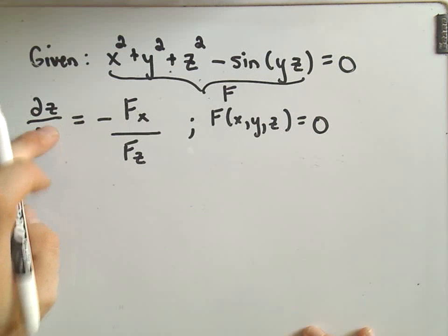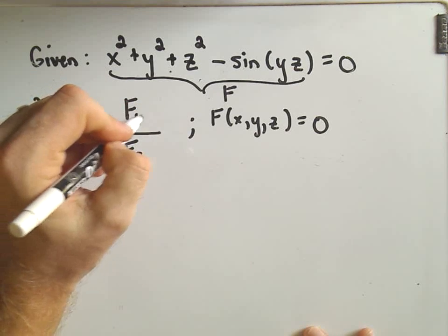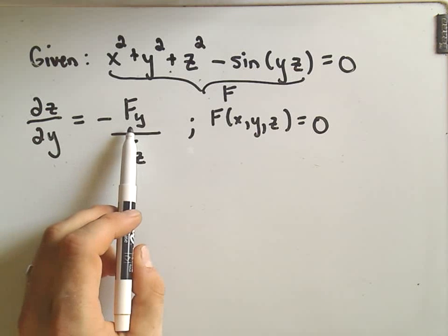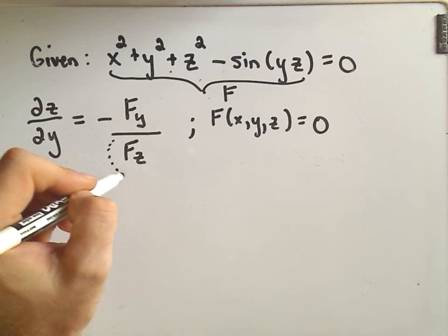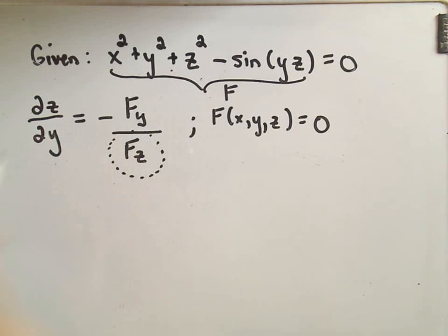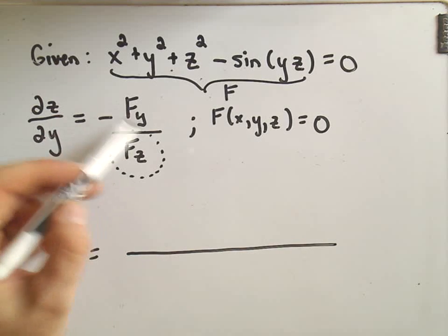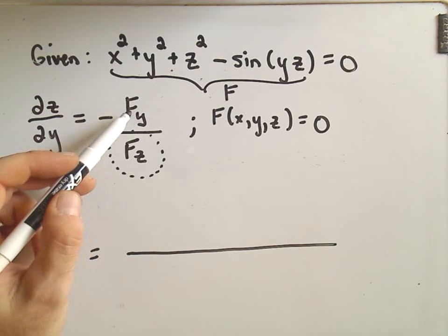So suppose we want to find the partial of z with respect to y. The only thing that changes in the formula is the numerator. So now we're going to take the partial with respect to y. I shouldn't have erased it all. This is another thing I want to point out. Notice the denominators are the same. So I should have really just left that down there because it doesn't change. So the only thing we really have to figure out now is the partial derivative with respect to y, and we'll throw that in the numerator.